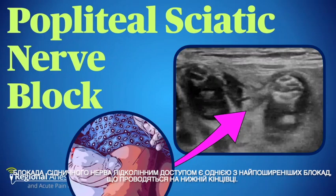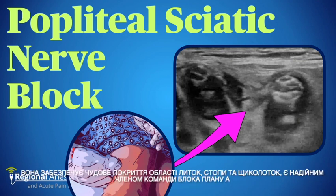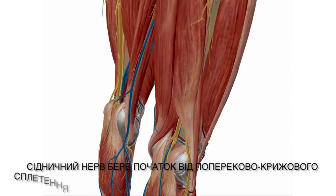The popliteal sciatic nerve block is one of the most common blocks performed on the lower limb. It provides excellent coverage of the calf, foot, and ankle and is a solid member of the plan A block team.